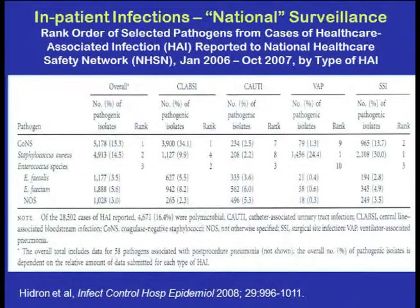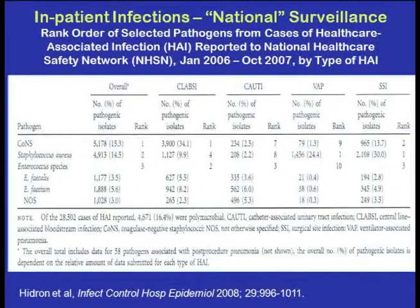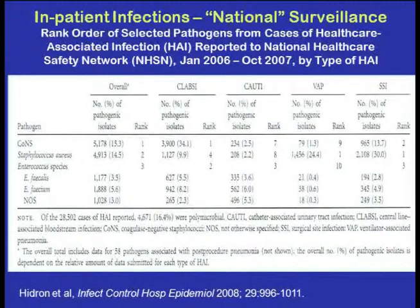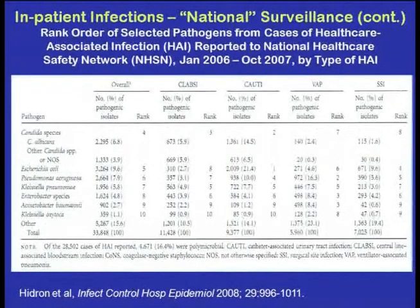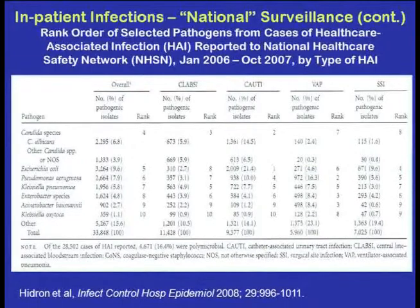Looking at relative rank by site of infection: overall, coagulase-negative staph is the number one pathogen, Staph aureus number two, and enterococci number three — gram-positives are at the top. For ventilator-associated pneumonias, Staph aureus and Pseudomonas tend to be number one and two. Among urinary tract infections, E. coli is number one, but Candida is number two, largely reflecting ICU populations.